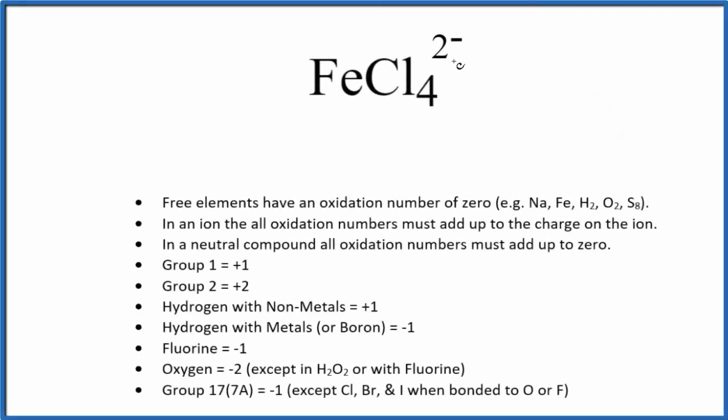Let's find the oxidation number for each element in FeCl4 2-. So the first thing we'll note, we have this 2- up here. This is an ion, and when we have an ion, all the oxidation numbers are going to add up to the charge on the ion. So that's important to know.